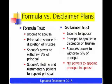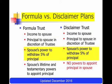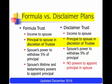Both of these trusts can be drafted to include other beneficiaries. This chart will show you the key differences. Both trusts are designed to provide income for the surviving spouse, and both trusts can give the surviving spouse the power to withdraw five percent of the principal every year.